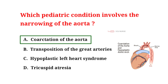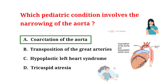Coarctation of the aorta is a congenital defect where a child's aorta is narrowed, leading to poor blood flow. This can cause symptoms like difficulty breathing, poor feeding, and high blood pressure in the upper body. Treatment usually involves surgery or procedures to widen the narrowed area to ensure proper blood flow and prevent complications.